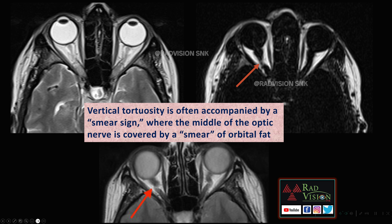Vertical tortuosity is often accompanied by the smear sign. Whenever there is vertical tortuosity, the middle part of the optic nerve is covered by a smear of orbital fat, which is called the smear sign. Here you can also see the vertical tortuosity of the optic nerve and the middle part covered by a smear of fat.